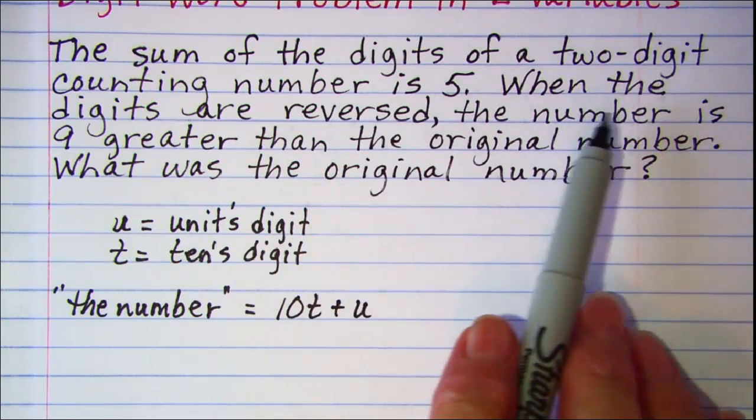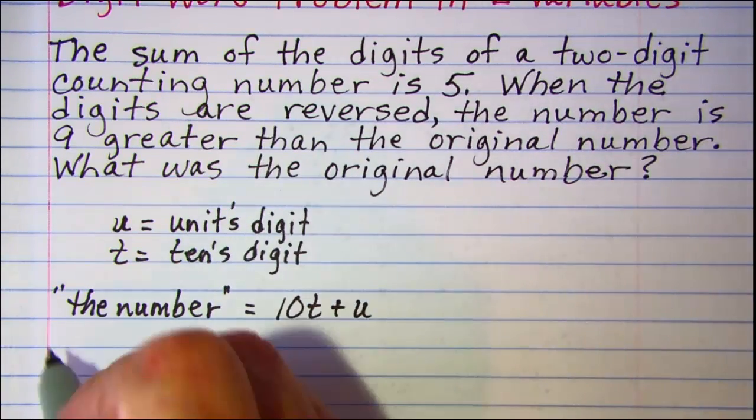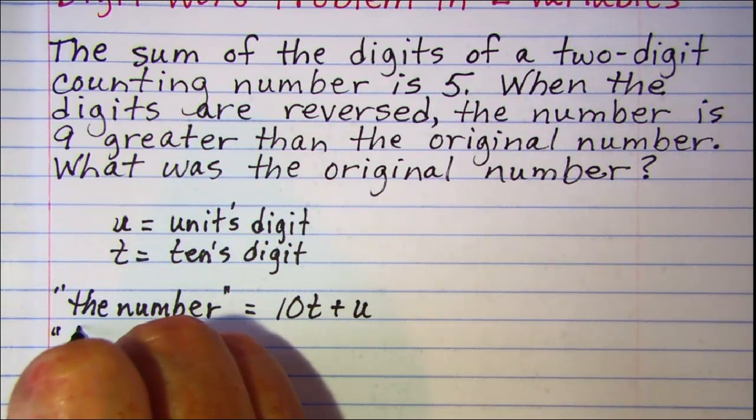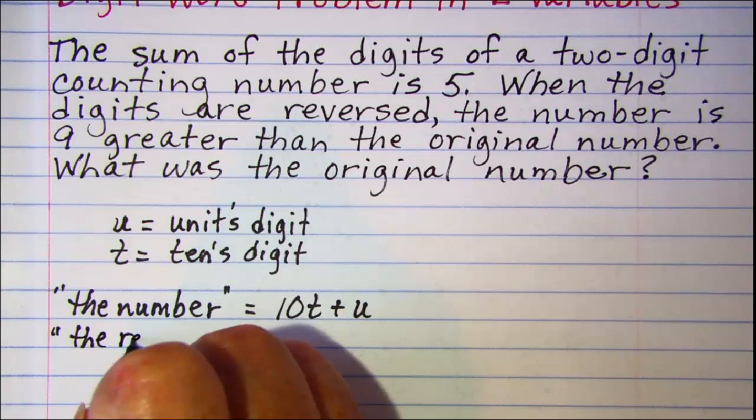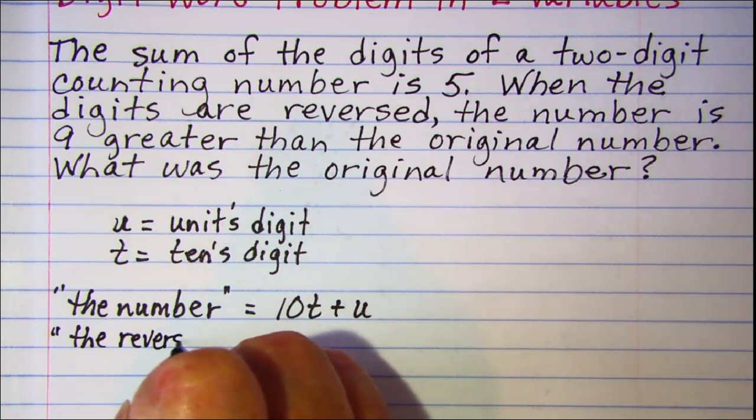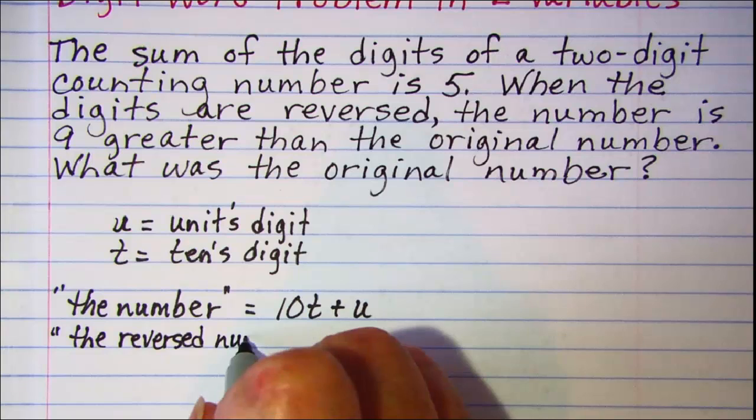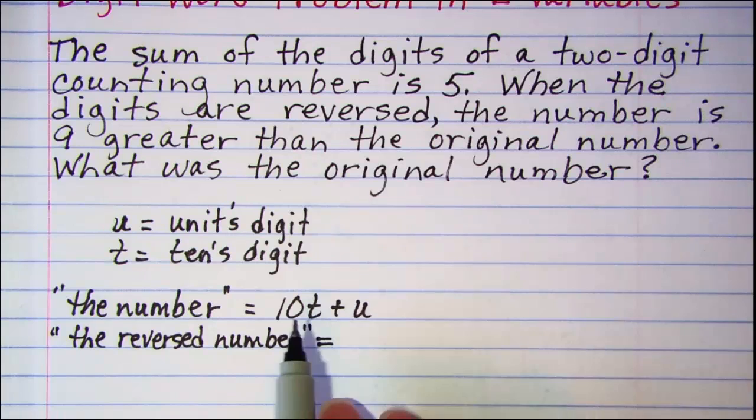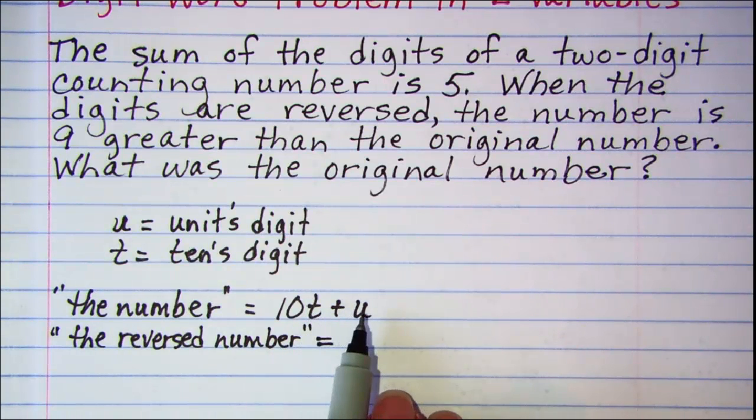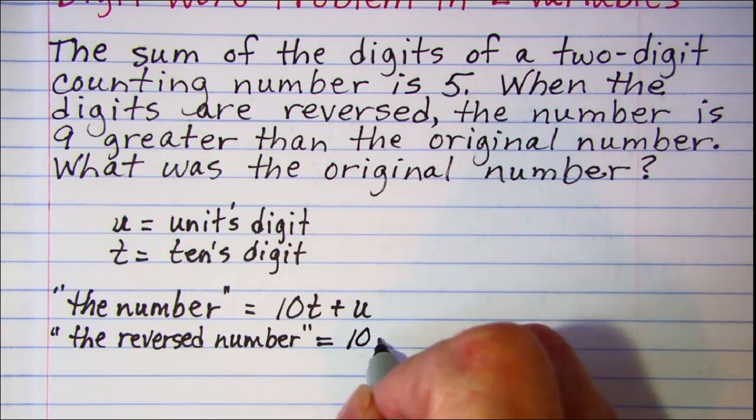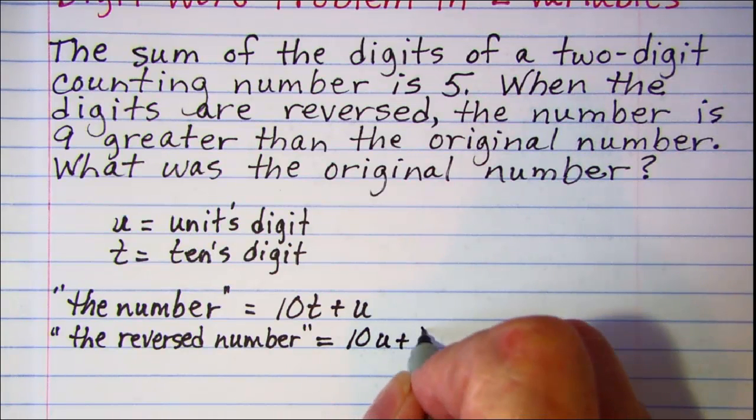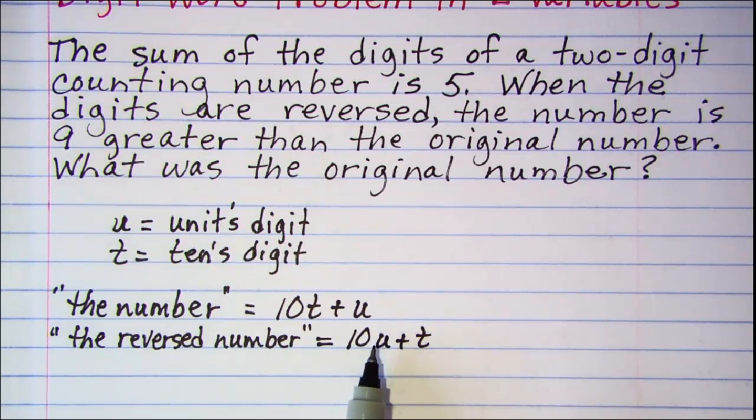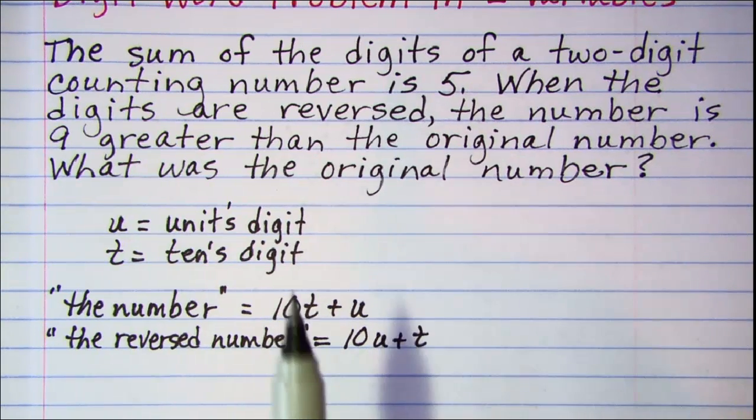Now, notice on this one, we reverse the digits. So, the number when we reverse, the tens digit is now in the units place and the units digit is in the tens place. So, the reversed number is going to be 10u plus t. We'll keep these in mind whenever we translate our word problem.